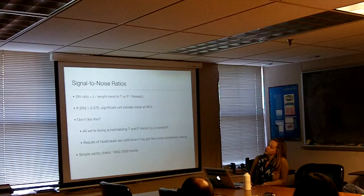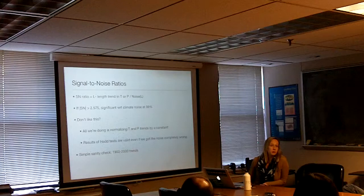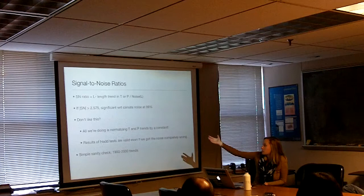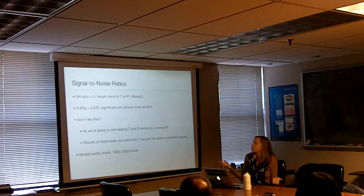The signal-to-noise ratio is defined as the L-length trend in this study — either global average temperature or global average precipitation — normalized by that noise measure. Basically, what's the typical L-length trend you would expect to get from internal variability alone? If that value exceeds 2.7, it's significant with respect to climate noise at 99% confidence. If it exceeds 2, that's significant at 95% confidence.